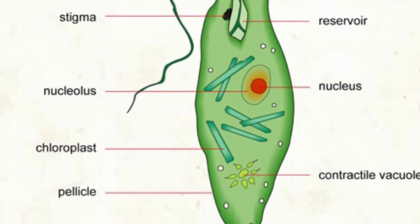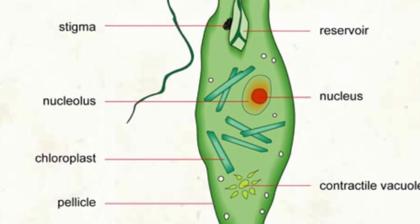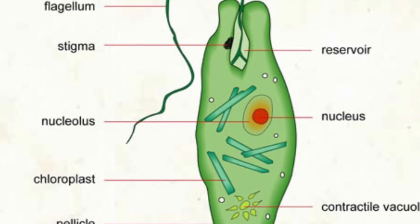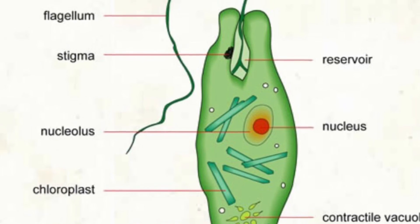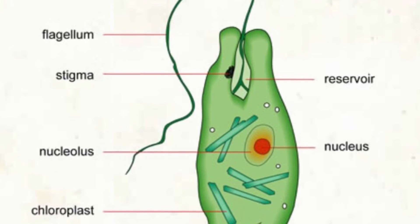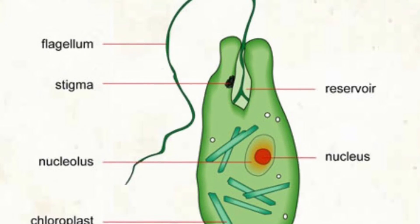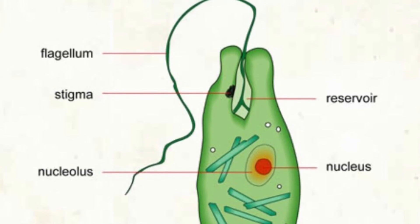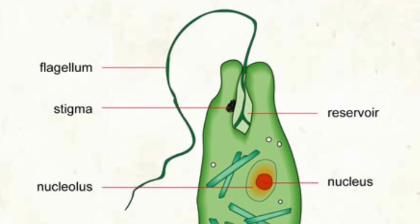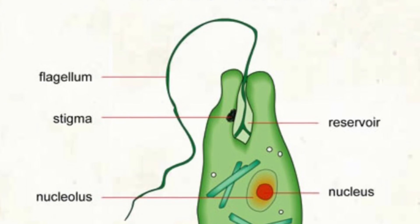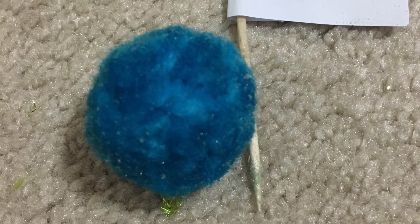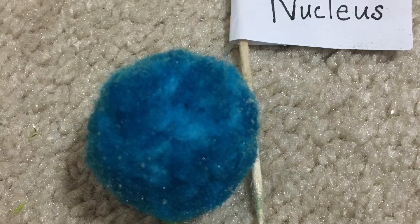Euglena are similar to volvox in how they eat. They are both heterotrophs and autotrophs, which means they both eat other organisms and make their own food through photosynthesis. This means they have chloroplasts, so they are also both green and live in water. They each have red eye spots and move using flagella as well. Euglena, however, do not live in colonies and have a very different shape. While volvox are almost round, euglena are almost shaped like a pea pod. All four of these microorganisms are eukaryotes, which means they have nuclei.